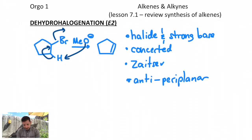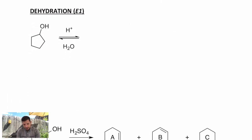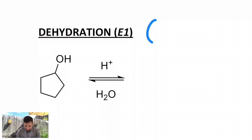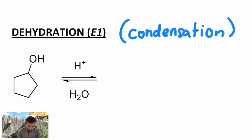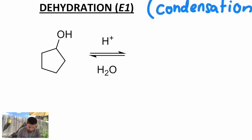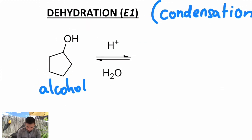The second way is called a dehydration. This is an E1 mechanism, an application of an E1. This is also called a condensation because you're losing water. And it involves an alcohol with acid, strong acid. So if I had cyclopentanol, I could get cyclopentene, the same product.